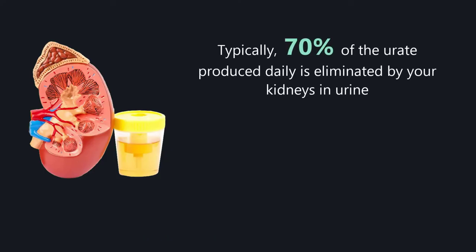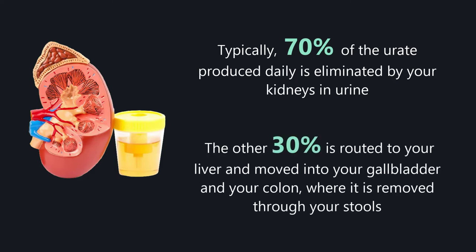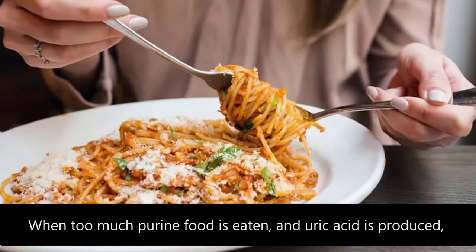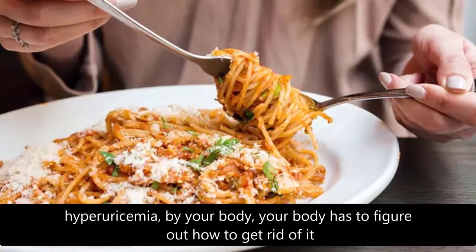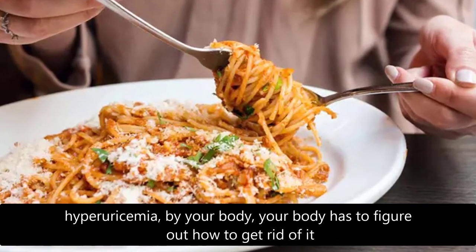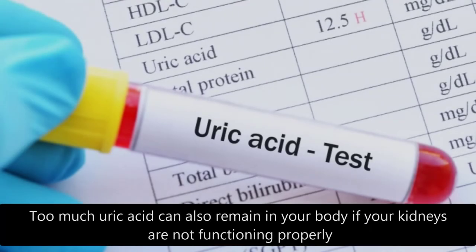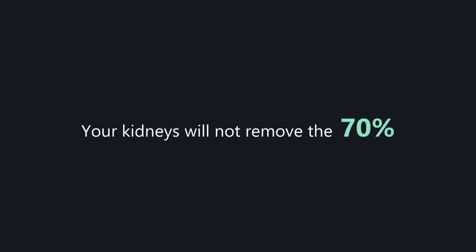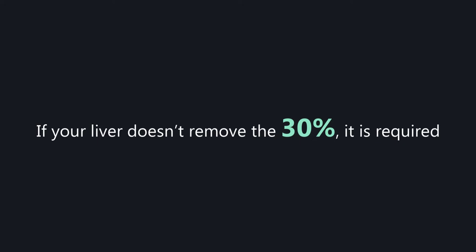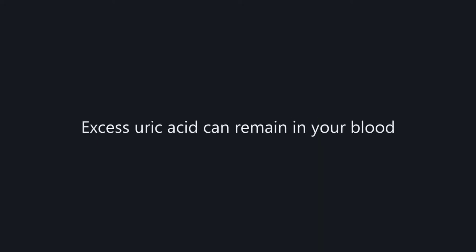Typically, 70 percent of the uric acid produced daily is eliminated by your kidneys in urine. The other 30 percent is routed to your liver, moved into your gallbladder and colon, and removed through your stools. When too much purine is eaten and excess uric acid (hyperuricemia) is produced, your body must eliminate it. If your kidneys are not functioning properly or your liver doesn't remove its required 30 percent, excess uric acid remains in your blood.